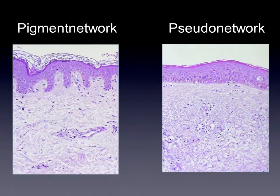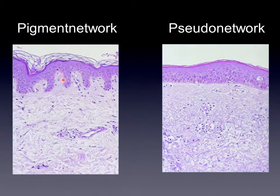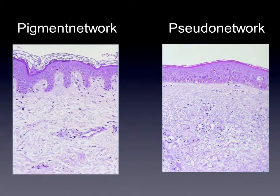Here are two histological slides: one of the normal skin of the trunk, and you can see the papillae here. And here on the right side, we see the flattened skin of the face, and therefore we have this pseudonetwork.